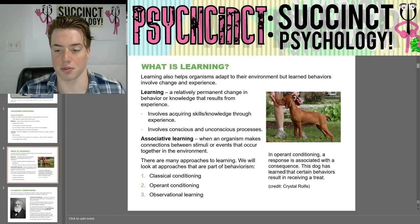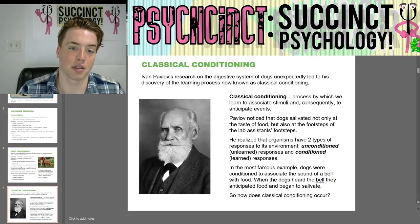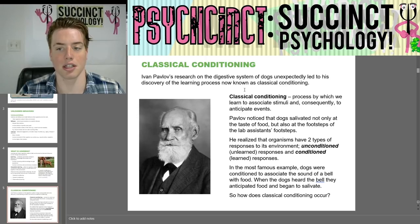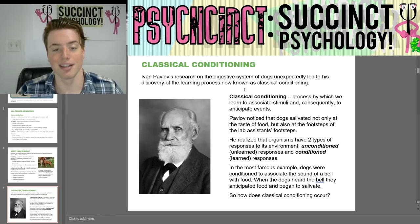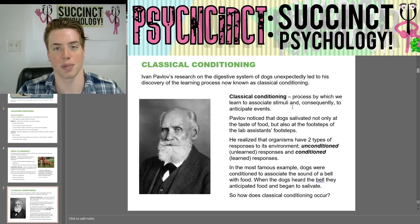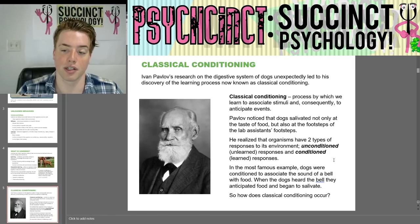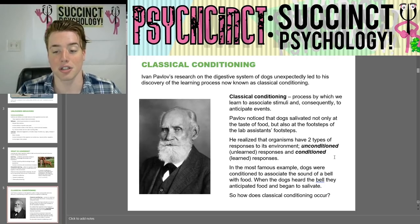In operant conditioning, a response is associated with a consequence — this dog has learned that certain behaviors result in receiving a treat. Classical conditioning: Ivan Pavlov's research on the digestive system of dogs led to his discovery of the learning process now known as classical conditioning — a process by which we learn to associate stimuli and consequently to anticipate events. Pavlov noticed that dogs salivated not only at the taste of food, but also at the footsteps of the lab assistant. He realized organisms have two types of responses: unconditioned or unlearned responses, and conditioned or learned responses.